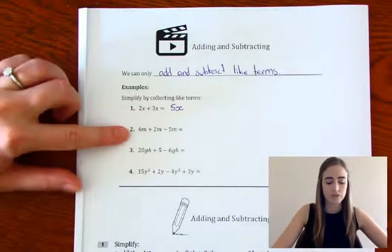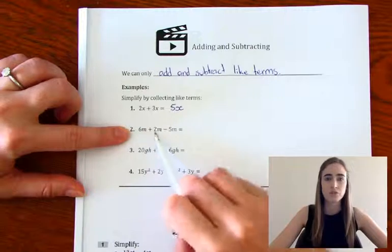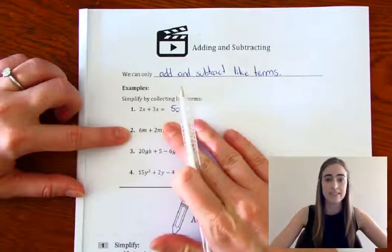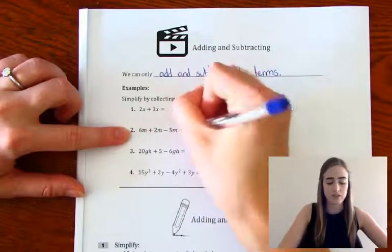Our second one, we've got 6m plus 2m minus 5m. Again, all three of those are like terms. We're going to go 6 plus 2 is 8, so that would give us 8m. Then we're going to minus 5m, so that would bring us down to 3m.